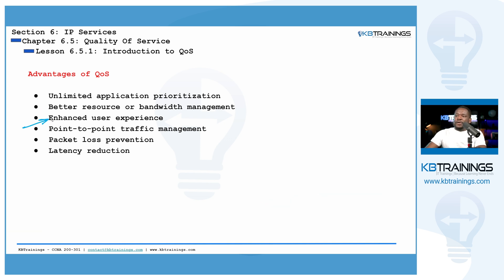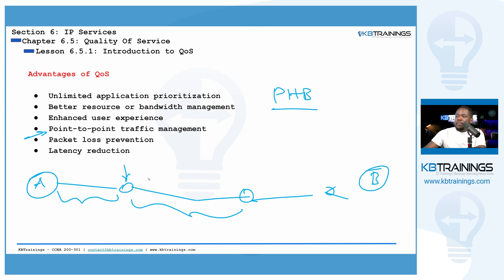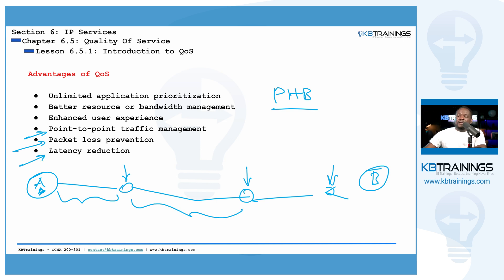QoS can also enhance the user experience — the guy on the phone will have a great phone call. We can also manage point-to-point traffic, where your traffic goes from node to node through different hops. We can make sure every single connection is working at its best using QoS, which is what is called per-hop behavior — we go on each hop and implement some level of QoS so a certain packet goes from A to B with the best performance possible. We can also prevent packet loss and reduce latency by picking what can be held and what needs to be given priority.